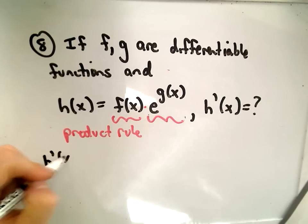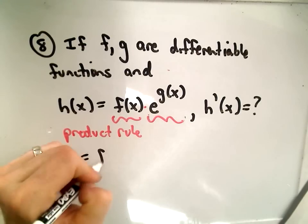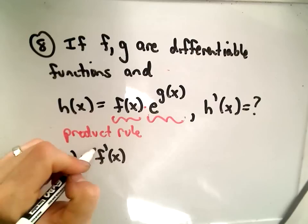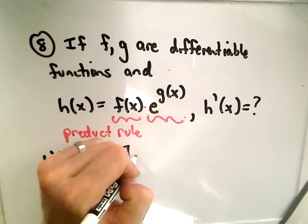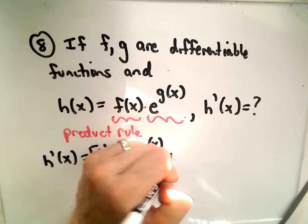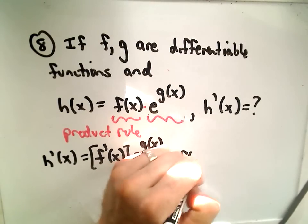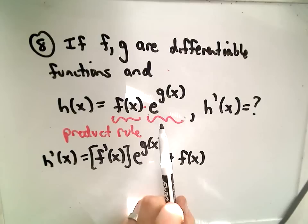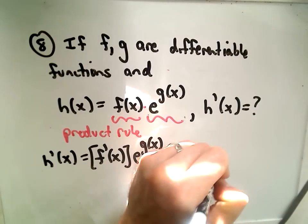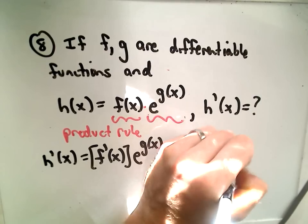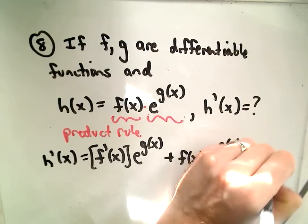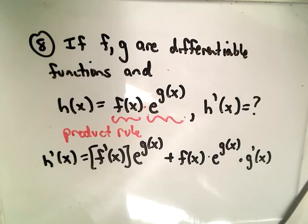So really it's just using the product rule and remembering the derivative of e to the g of x. The product rule says we take the derivative of the first piece and leave the second function alone, plus we leave the first function alone and apply the derivative formula on e to the g of x — we get e to the g of x, multiplied by the derivative of the exponent, which is g prime of x.